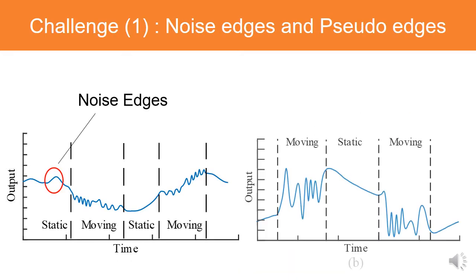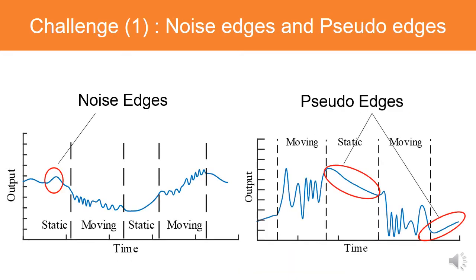However, we encounter some challenges to obtain an accurate estimation of the azimuth change. The first challenge is that a PIR sensor's analog signal contains rising and falling edges not caused by human motion. These edges are of two kinds: noise edges and pseudo-edges, and we should remove them to improve the estimation accuracy.